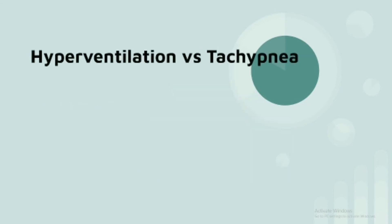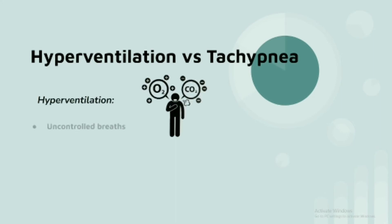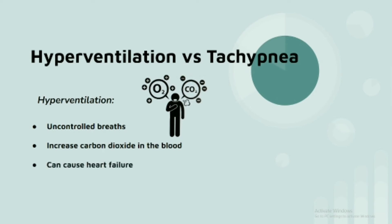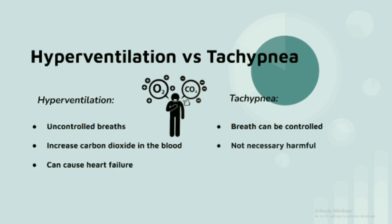But the difference is that hyperventilation is an uncontrolled breath and leads to an increase of carbon dioxide level in the body, and this can cause heart failure. While tachypnea does not necessarily have to be harmful to the oxygen level in the blood, and with tachypnea you can also control your breathing. For example, when you are sitting or relaxing, you can breathe normally, and this does not necessarily harm your body, and we can avoid heart failure.